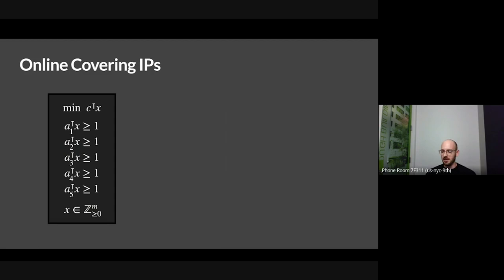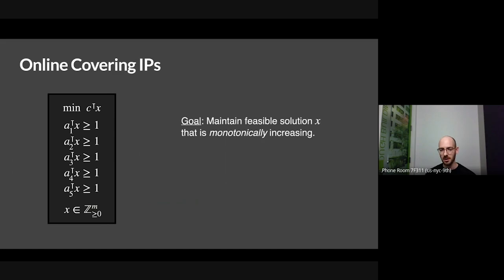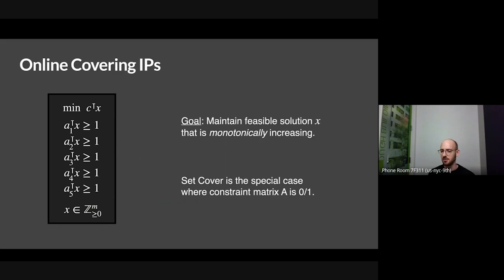A covering IP is an integer program of the form: minimize c-transpose x, subject to the constraint that a_i dot x is at least 1 for all constraint vectors with positive entries. In the online version, you don't know the constraints ahead of time — they're shown to you one by one. Your goal is to maintain a feasible solution where x is only allowed to ever increase monotonically. Set cover is the special case where this matrix is 0-1.